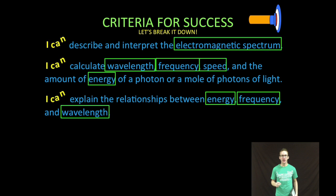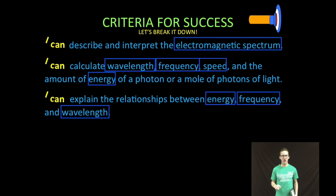Okay, so let's break that down a little bit as always. First thing we're going to do is describe and interpret this thing called the electromagnetic spectrum. Two, we are then going to calculate wavelength, frequency, speed, and the amount of energy of a photon or a mole of photons of light. And then numero three, we are going to explain the relationships between energy, frequency, and wavelength.